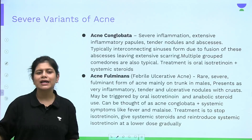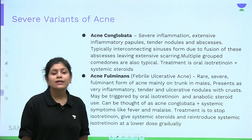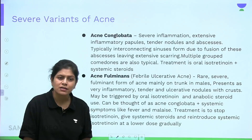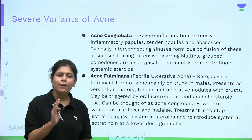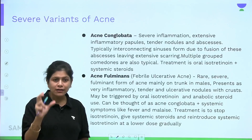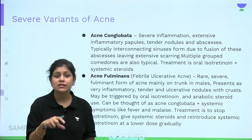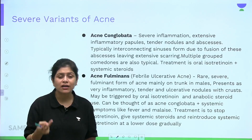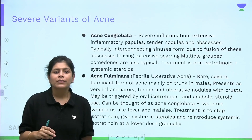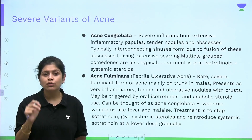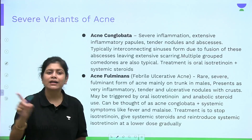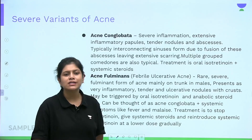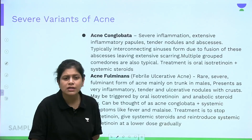Febrile ulcerative acne, also called acne fulminans, is acne conglobata plus systemic symptoms. In addition to tender nodules, abscesses, and interconnecting sinuses, there are ulcers and systemic features including fever, arthralgia, raised ESR, and leukocytosis. Importantly, it can be triggered by giving oral isotretinoin at a high dose to a patient with very severe acne. Management: stop isotretinoin, give steroids to stabilize inflammation, then reintroduce isotretinoin at a very low dose and gradually escalate.